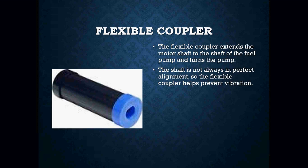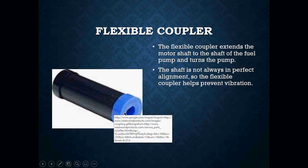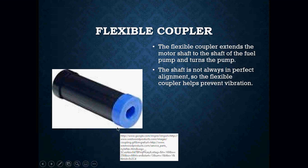Your flexible coupler extends the motor shaft to the shaft of the fuel pump and helps turn the pump. The shaft is not always in perfect alignment, so a flexible coupler helps prevent vibration. When working on burners, we want to inspect the coupler and make sure the ends are not damaged. If the ends are stripped out or broken, your blower, coupler, and fuel pump probably will not spin. You need the flexible coupler installed for the fuel pump to spin.